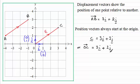And it's important to note that the coordinates of the point C are exactly the same as the coefficients of i and j. In other words, the x-coordinate is 3 and the y-coordinate is 2. And this is always true with position vectors, unlike displacement vectors.